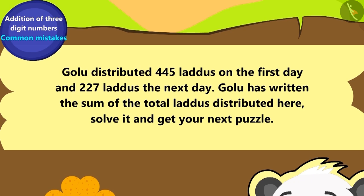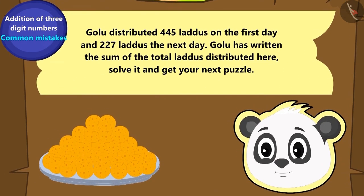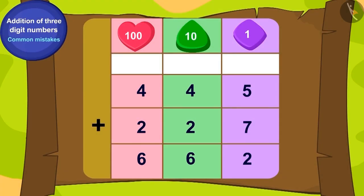Here is Bablu's first puzzle. Golu distributed 445 laddoos to his friends on the first day and 227 laddoos the next day. Golu has written the sum of the total laddoos distributed here. Solve it and get your next puzzle. Is this addition correct?